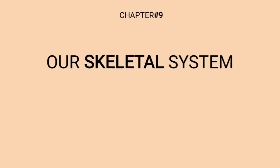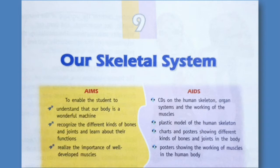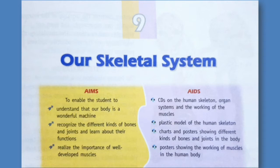Starting with the lesson on our skeletal system, the topics we will discuss today will basically be organ system and the skeleton — this is part one of the lesson. While learning or reading any lesson, we have to have clear aims in mind. I have highlighted this from your textbook page so you will identify this particular part and be aware that knowing the aim of a lesson is important.